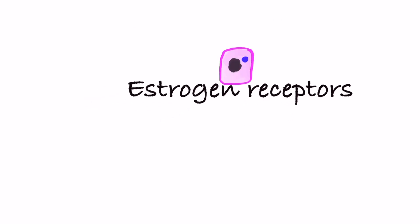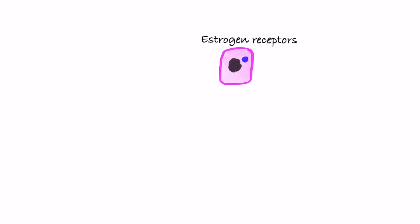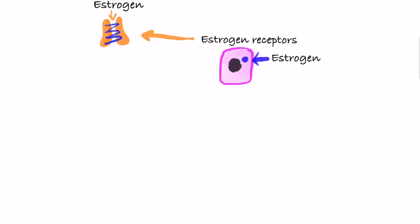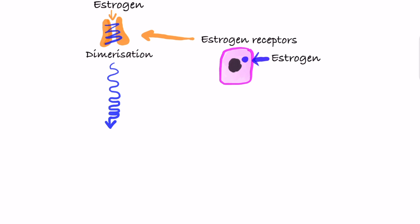Longer the exposure, more the chance. In one's lifetime, breast cancer cells can be hormone receptor positive or hormone receptor negative. In hormone receptor positive breast cancer, the estrogen receptor is a nuclear receptor. Estrogen binds to these receptors, which then undergo a change in conformation called dimerization — essentially activation of a cascade that influences certain estrogen-responsive genes. One of these genes is the progesterone receptor gene.